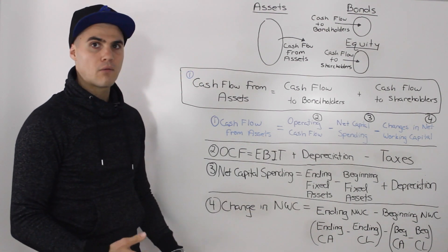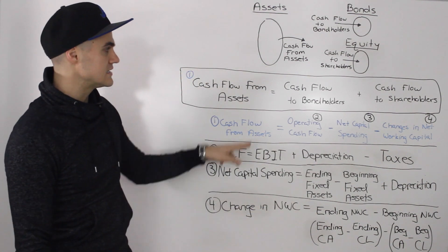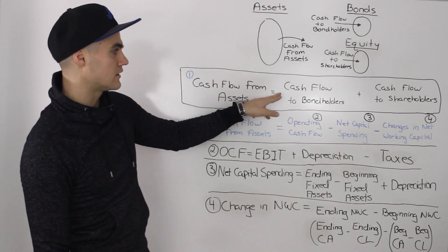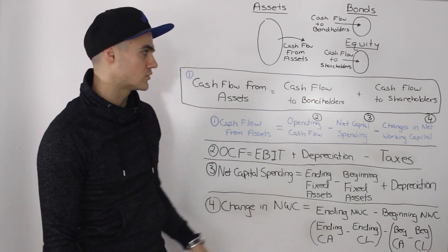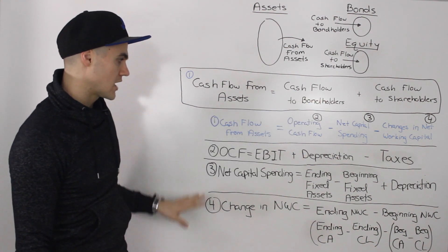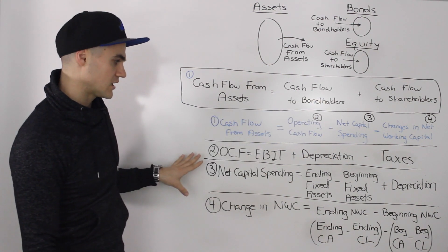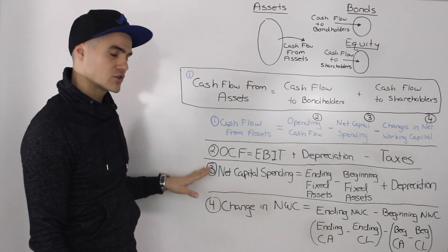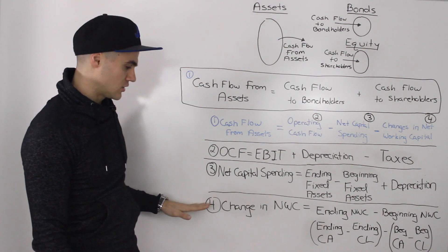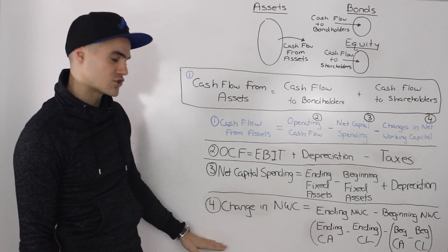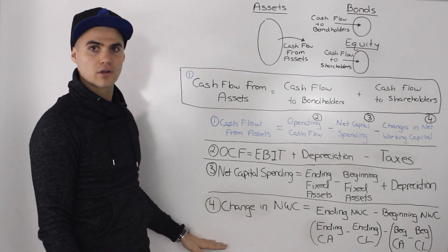Now I'm going to get into detail on the cash flow to bondholders and cash flow to shareholders. I'm going to erase this portion, so make sure you continue the note under changes in net working capital.